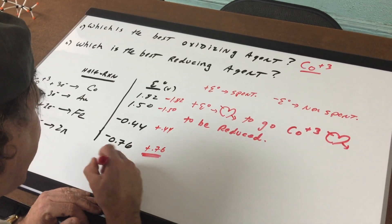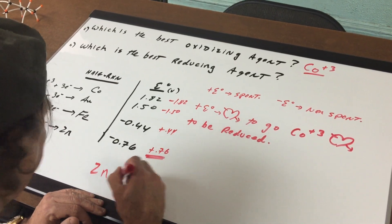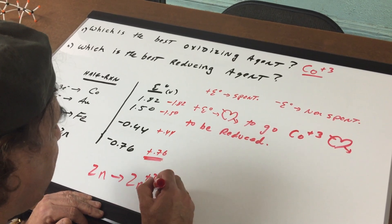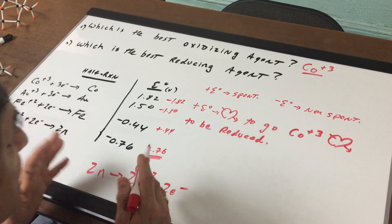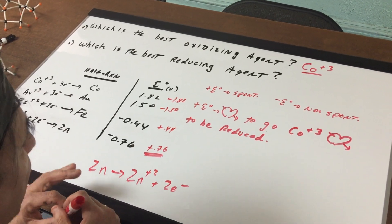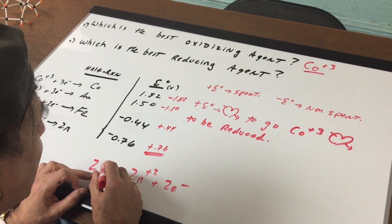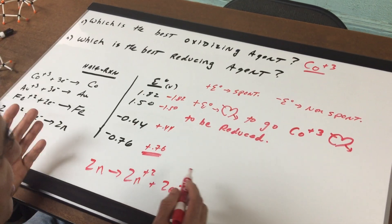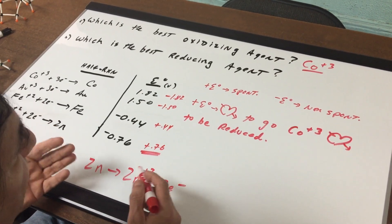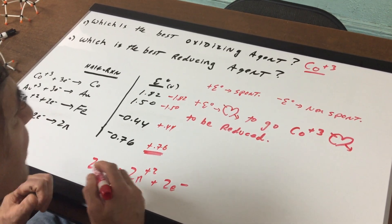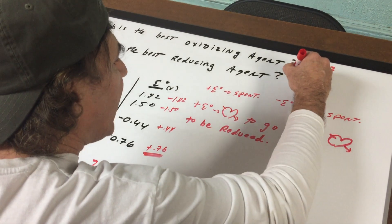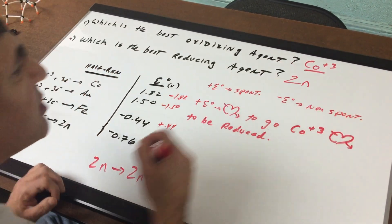What would the reverse of that be? It would be zinc going to zinc plus two plus two electrons. So that would be the most favorable. If it's the most favorable, zinc loves to be oxidized the most. If it wants to be oxidized the most, that means that it would be the best reducing agent, and therefore the answer would be zinc.